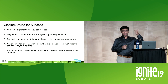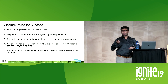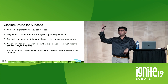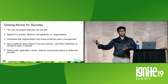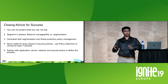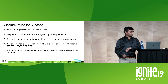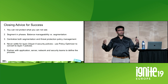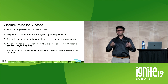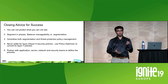Never settle for layer 3–4 policies, as the Ferrari example illustrates. Use Policy Optimizer — it will help you move automatically from layer 3–4 policies to layer 7 by looking at App-ID logs, moving you to a more secure state. What customers tell us is that micro-segmentation is the project where they could bring together all their teams — application, network, and security — under one umbrella. It was the project that united those teams. Take this project as an opportunity to unite your teams.